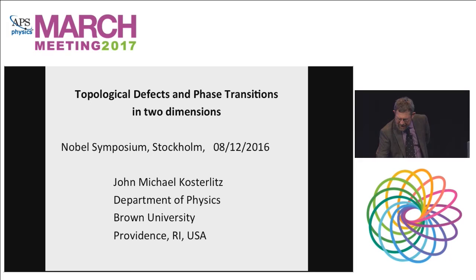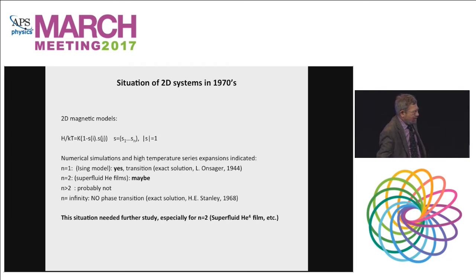The subject of the talk is topological defects and phase transitions in two dimensions. The way I came to this is a bit peculiar because I was a high energy physicist who had done some complicated calculations for essentially no return. I ended up, having failed to get into CERN where I wanted to go, in Birmingham University, which is the last place I wanted to be at that time.